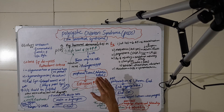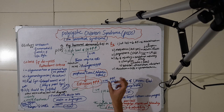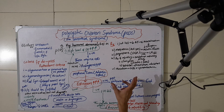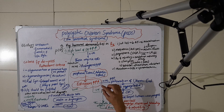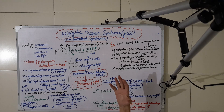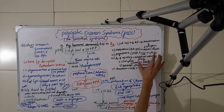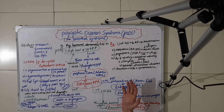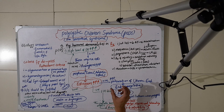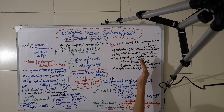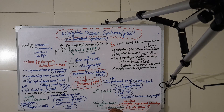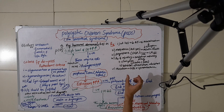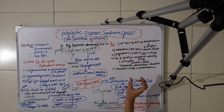Another treatment step is giving patients metformin. Metformin is an anti-diabetic drug that also helps patients reduce weight and improves insulin resistance. We also give progesterone in the form of an oral contraceptive pill; the progesterone goes to the pituitary and gives negative stimulation to the release of luteinizing hormone.